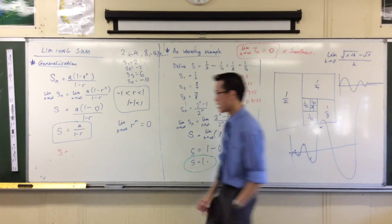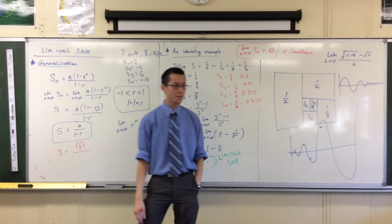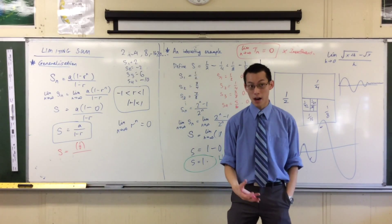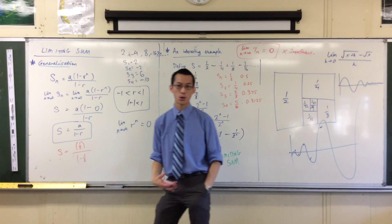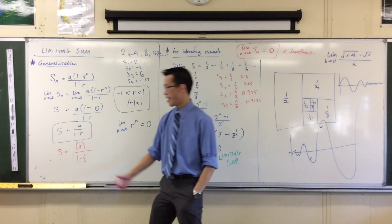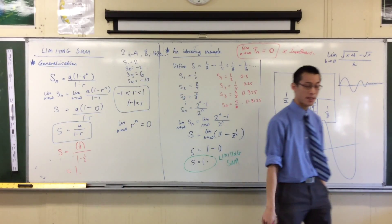It's a half. What am I dividing by? One minus a half. The common ratio. One minus a half. One minus a half, of course, is just a half. A half divided by a half. That had better be one. Okay? Are you happy with that?